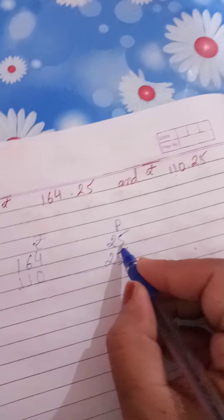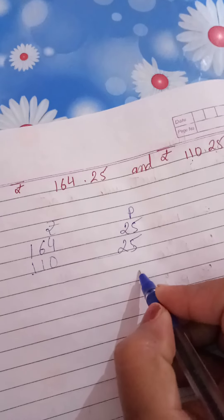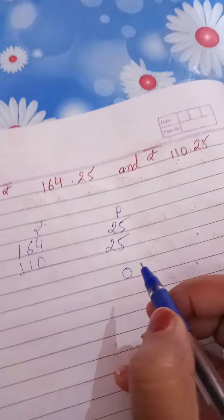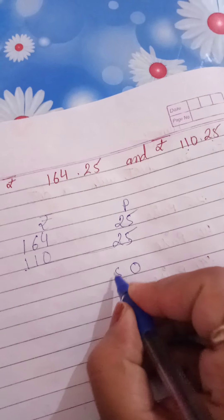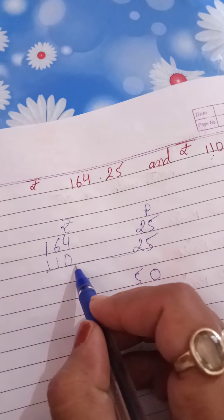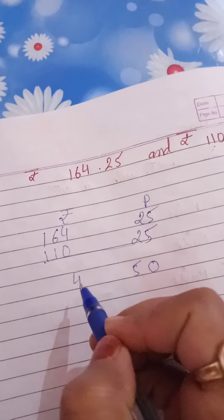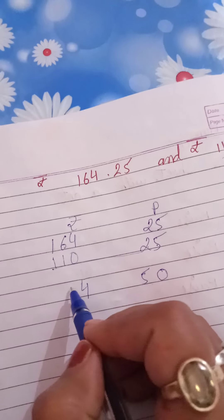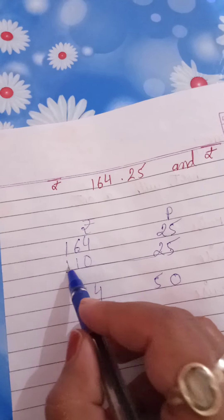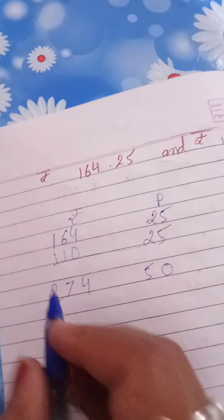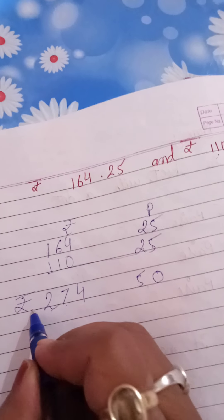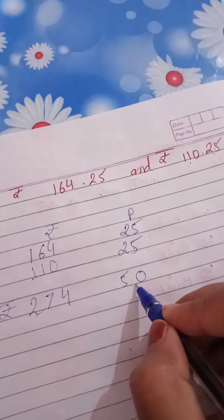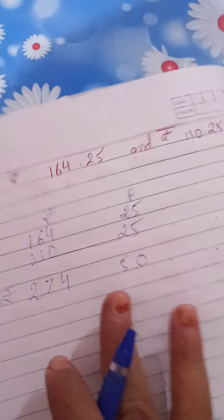Add. So 5 plus 5, 10 and we will write only 0, 1 is left. So 2 plus 2, 4 and 1, 5. 4 plus 0 is equal to 4 and 6 plus 1, 7. 1 plus 1, 2. So now it is rupees 274.50. Now you will add on your own as well.